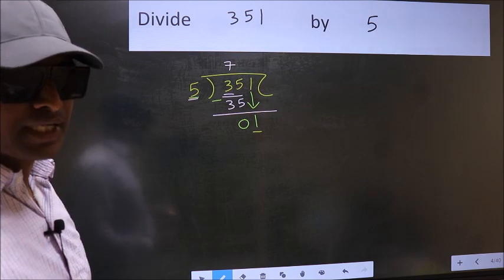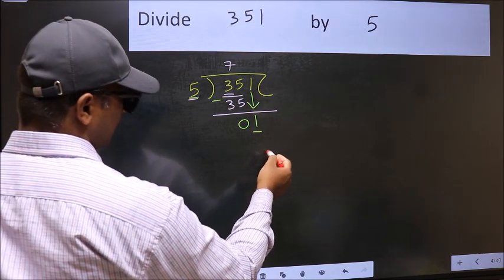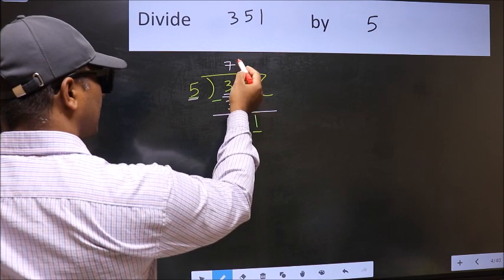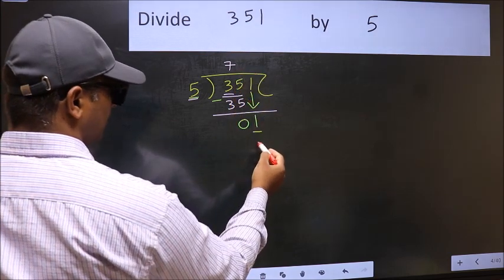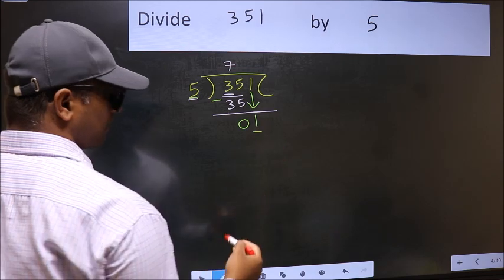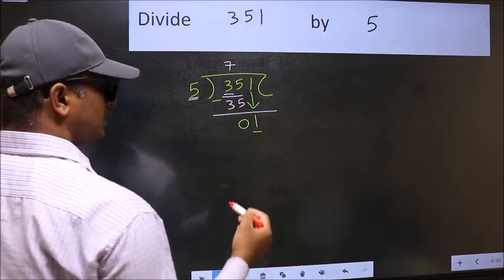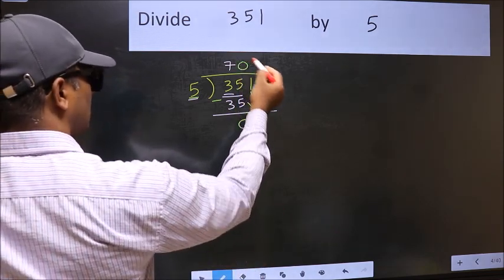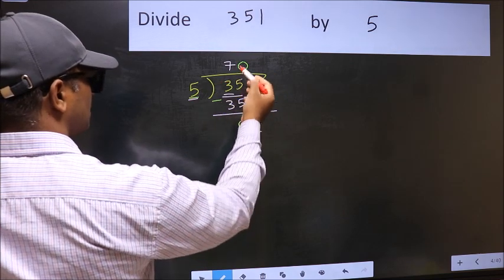Instead, what you should think of doing is: what number should we write here? If I take 1 here, I will get 5, but 5 is larger than 1. So what we should do is take 0. So 5 into 0 is 0.